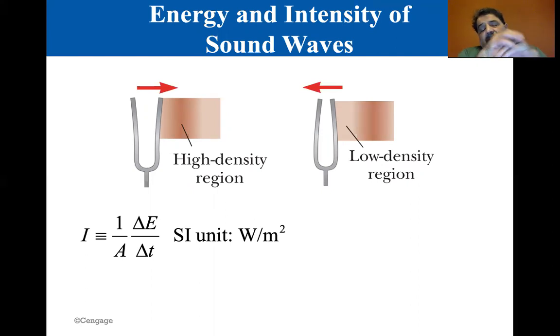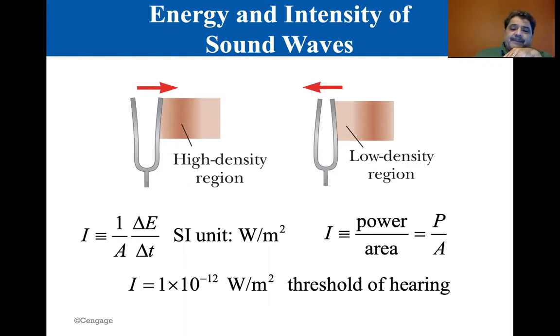So it's transferring its energy to the air molecules around it, and the intensity is equal to the change in energy over time divided by the area. Now energy divided by time is power, which is expressed in watts. So the SI units for the intensity is watts per square meter.